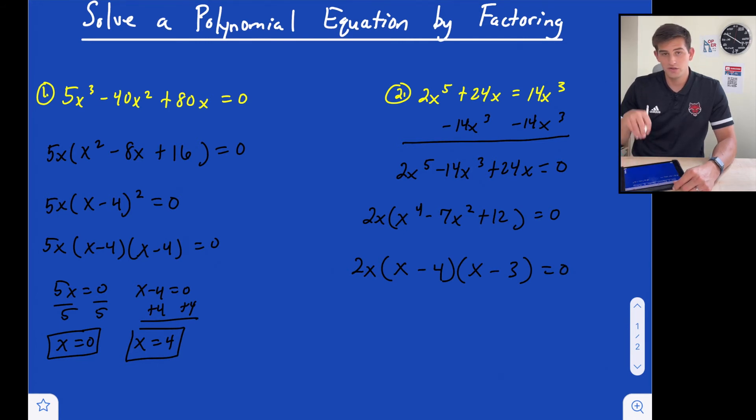So that would be our two factors if it were a quadratic x squared minus 7x. Well it's raised to the fourth power. It's a fourth degree. So all we have to do is make both of these x squared.